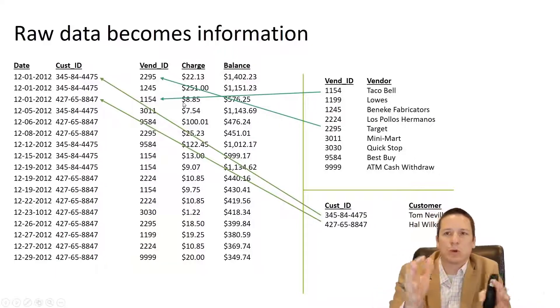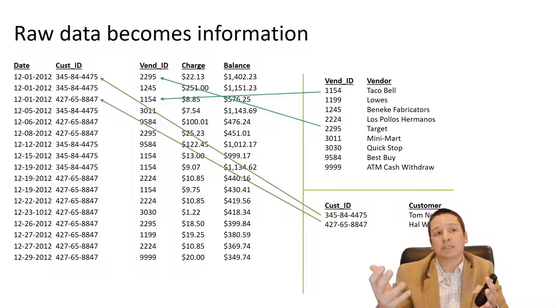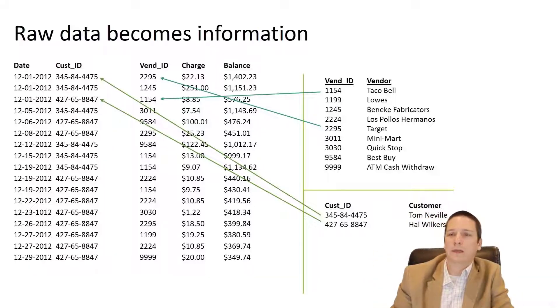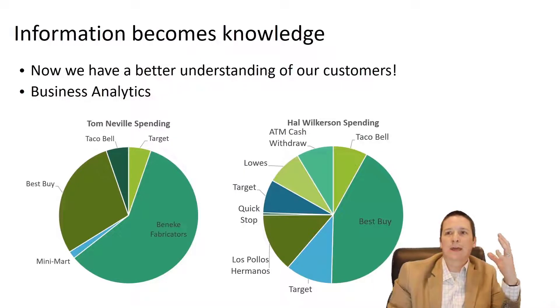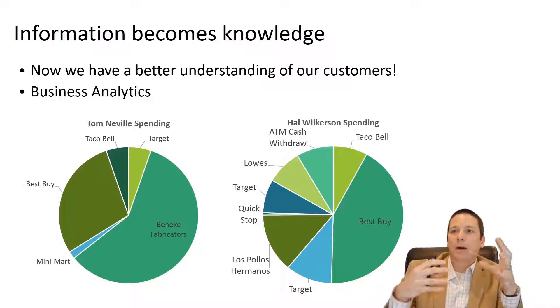So we take this raw data, we apply context, we combine it with other sets of data so that we can turn it into information.